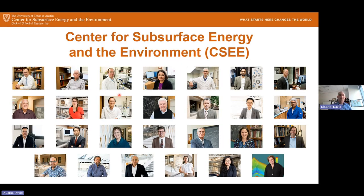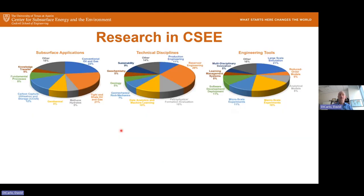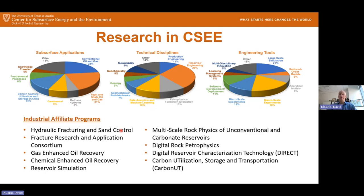So who are we? Here's a picture of all of us. Today's speaker is Dr. Mukul Sharma down here in the bottom left. Just what types of research do we do in the center? We have mainly three different things: subsurface applications, technical disciplines, and engineering tools. The main funding force for a lot of our research is our industrial affiliates programs, targeted on specific problems in the industry or subsurface problems.